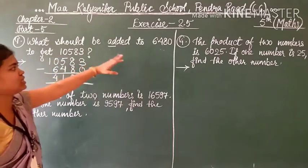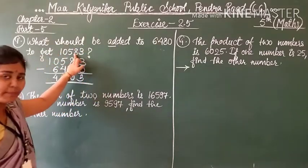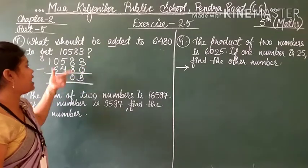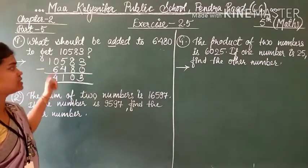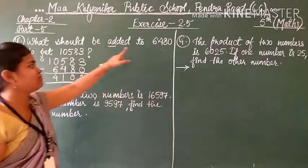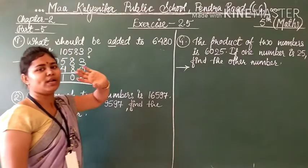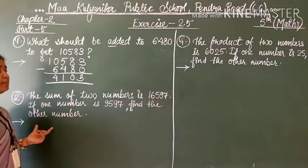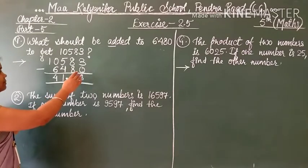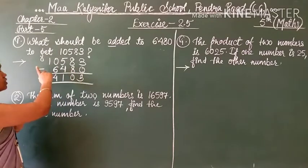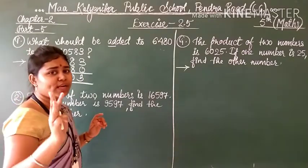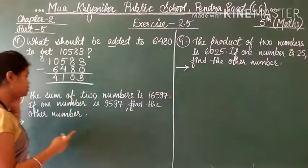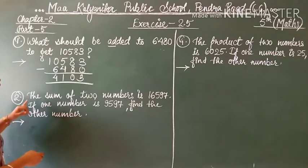So if this type of question is there, whatever the numbers are, you have to subtract the smaller number from the bigger number. Question number 1 and question number 3 are the same type — only the digits are changed. So question number 3 you can also solve the same way. I am solving question number 2 now.